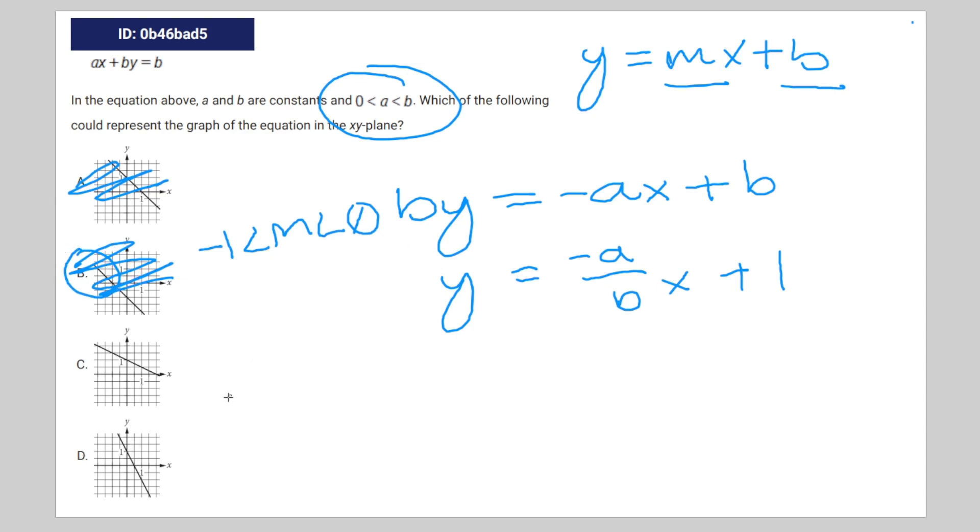And the same with D. This is a slope of negative 2, which is way outside, so it's not the answer either. And C is a slope of negative 1/2, which is between 0 and negative 1, so it's the answer.